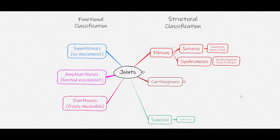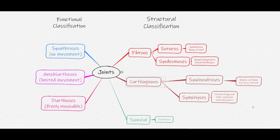The distal tib-fib joint is an example of a syndesmotic joint. Cartilaginous joints also do not have a joint cavity, but cartilage bounds the bones together. There are two types: synchondroses, which have hyaline cartilage separating the bones — the sternum-first rib joint is an example — and symphyses, which have a fibrocartilage pad between joint surfaces, such as the intervertebral joints of the spine and the pubic symphysis.